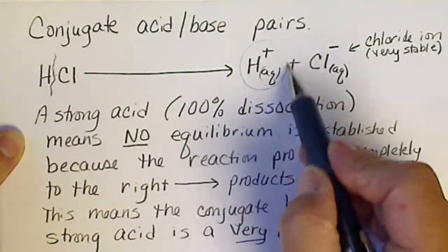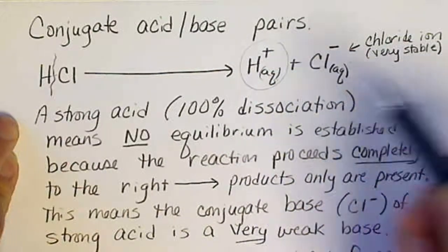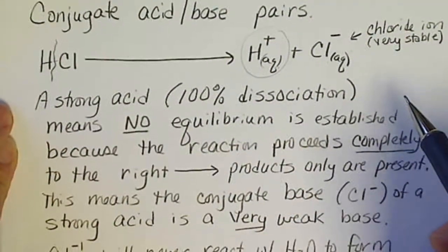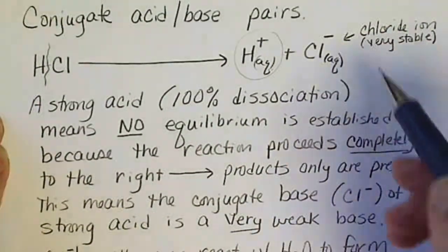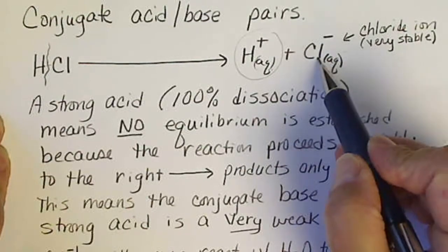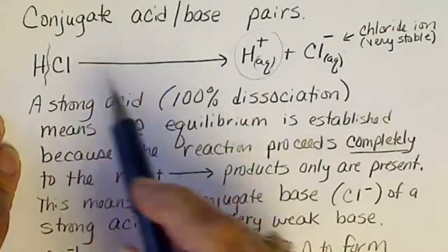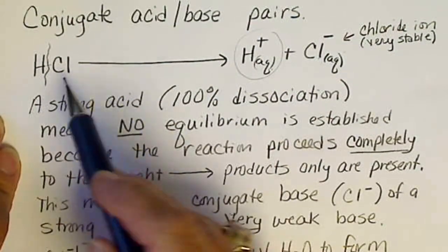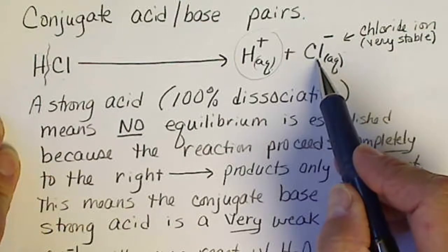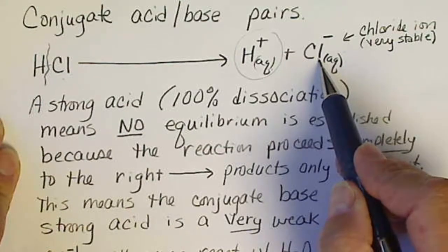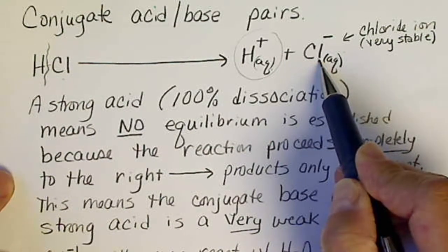So again, this is what makes a solution acidic. More importantly, we're going to be taking a look at the conjugate base of acids. A strong acid like hydrochloric acid has the chloride ion as its conjugate base.